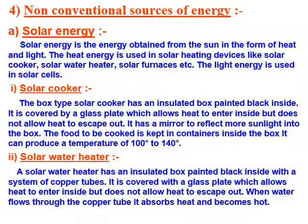A solar water heater has an insulated box painted black inside with a system of copper tubes. It is covered with a glass plate which allows heat to enter but does not allow heat to escape. When water flows through the copper tubes, it absorbs heat and becomes hot.